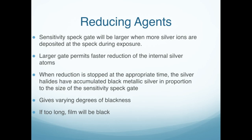We have a sensitivity spec. The sensitivity spec gate will be larger when more silver ions are deposited at the spec during the exposure. The larger gate permits the faster reduction of the internal silver atoms. When the reduction is stopped at the appropriate time, the silver highlights have accumulated black metallic silver in proportion to the size of the sensitivity spec gate. This gives us varying degrees of blackness — contrast. If too long, the film will be black.